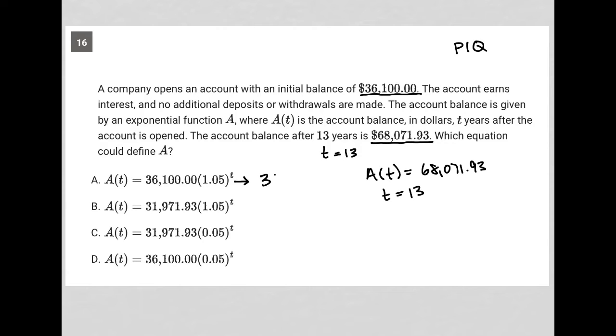So I'm just looking to see, is it true that $36,100 times 1.05 to the 13th power is truly going to be $68,071.93? So that's the question we're answering. Let me start with that.